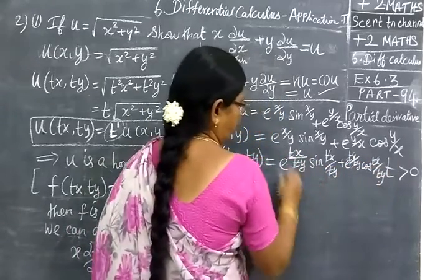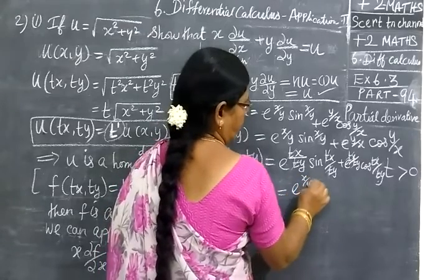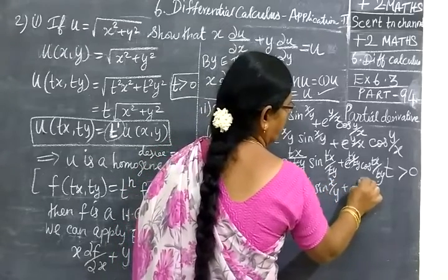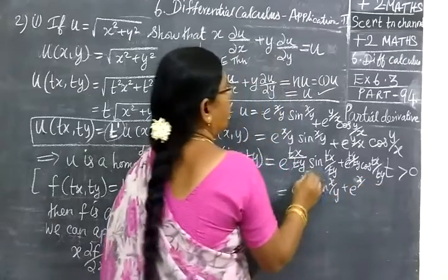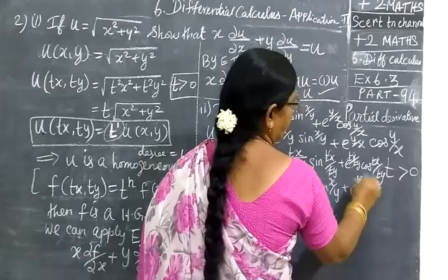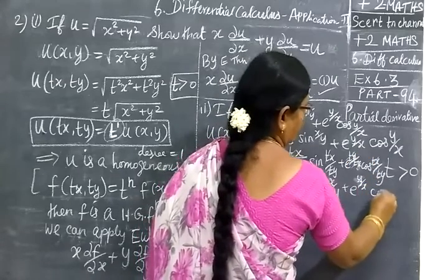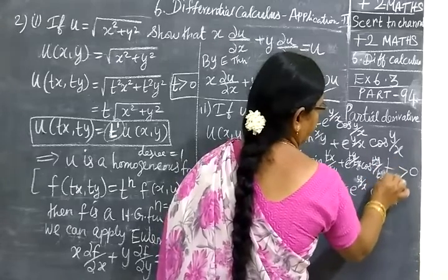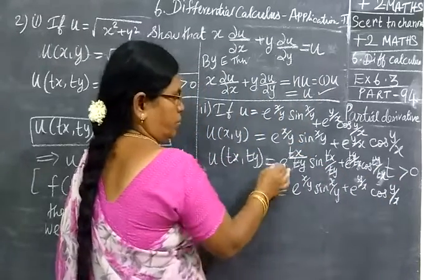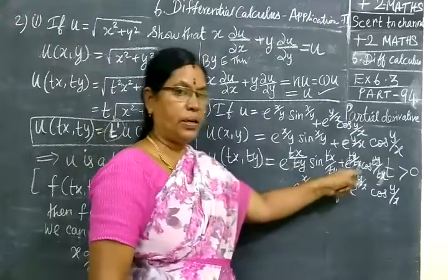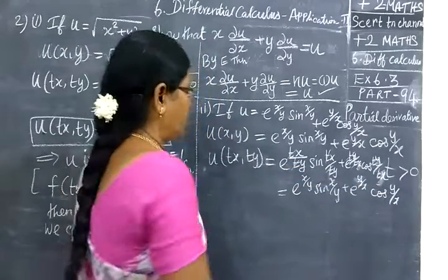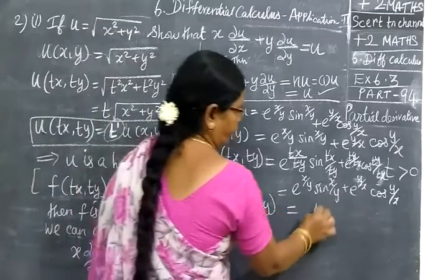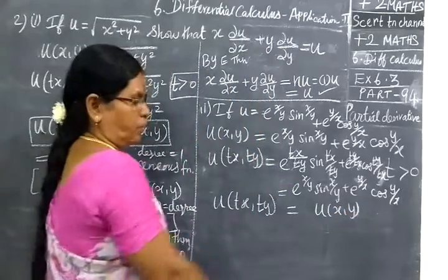So we need to ask: this means e power x/y times sin(x/y) plus e power x/y times cos(x/y). When we substitute t, all t's cancel. So u of tx, ty equals u of x, y. The original function is coming back.